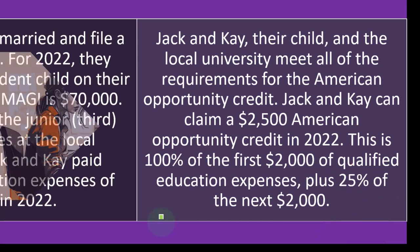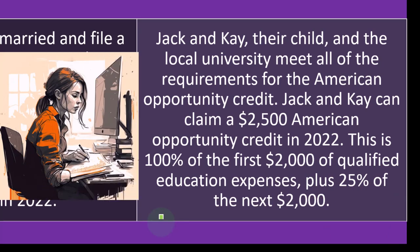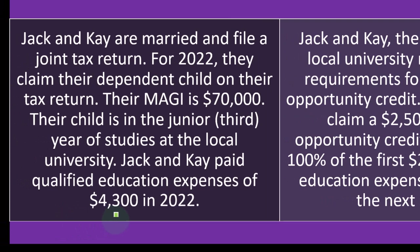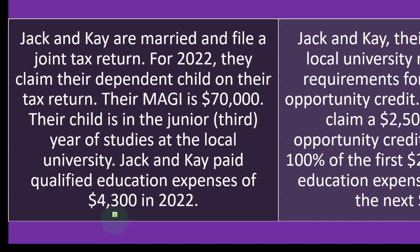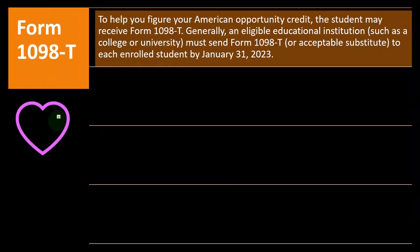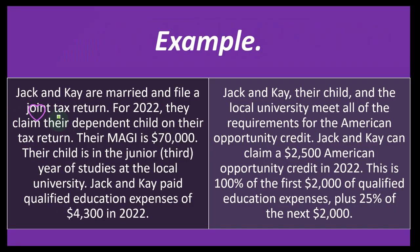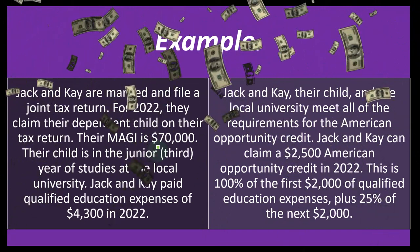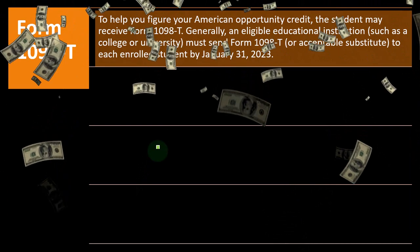Jack and Kay can claim a $2,500 American Opportunity Credit in 2022. This is 100% of the first $2,000 of qualified expenses, plus 25% of the next $2,000. They paid $4,300 — that extra $300 gave no additional credit benefit, since the formula caps at $4,000. Also note they didn't hit the income threshold for the MAGI phase-out at $70,000, so the credit is not reduced.